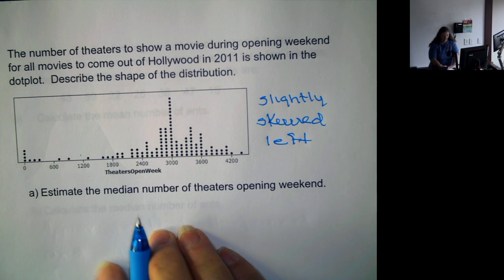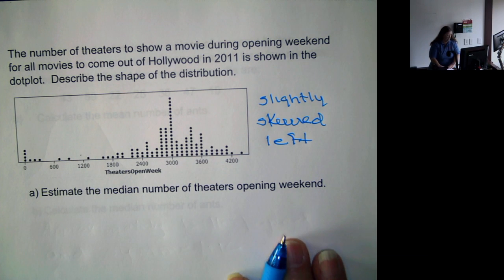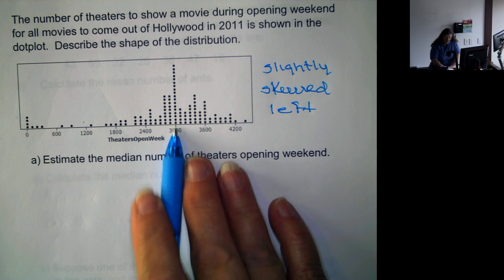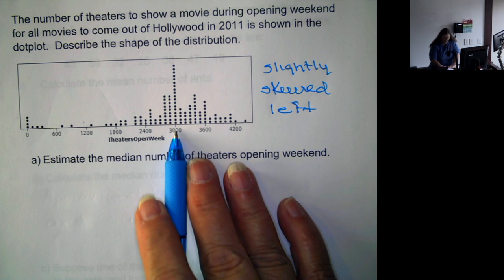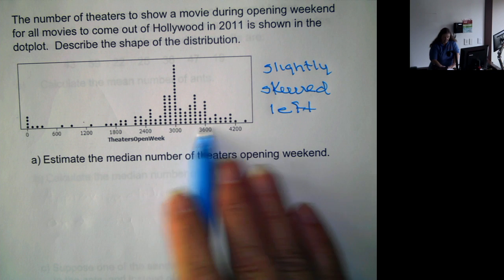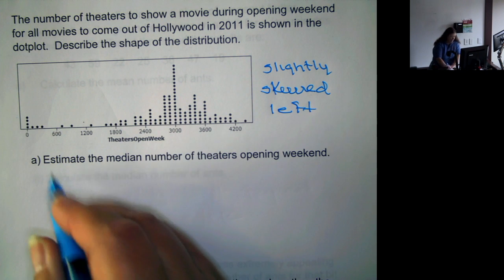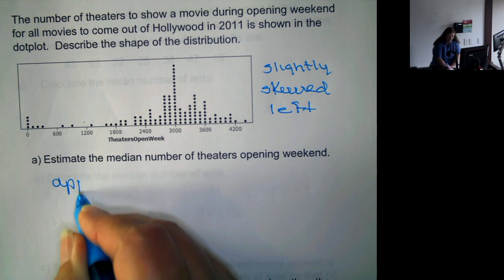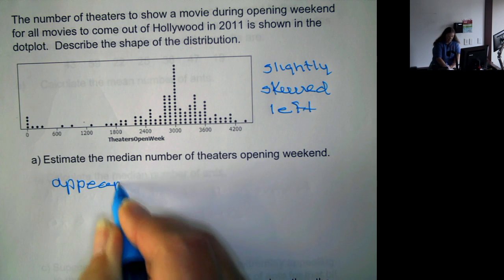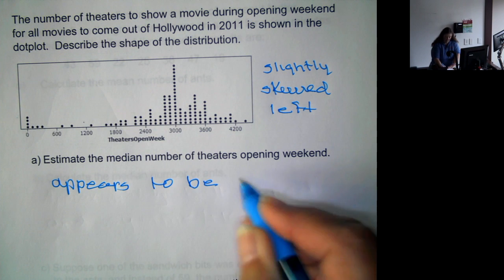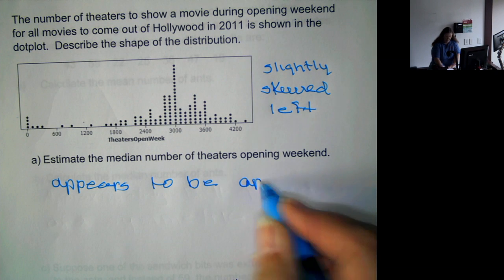Now, if we want to estimate the median number of theaters the opening weekend, we look and the highest peak is right around 3,000 and that seems to be about halfway between all the other numbers. So it appears to be around 3,000.